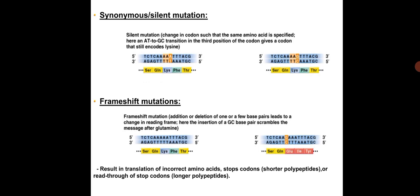Based on changes in the reading frame of codons on mRNA and changes in functional properties of the protein generated, mutations can be categorized. In synonymous or silent mutation, the change in codon is such that the same amino acid is specified. An AT to GC transition in the third position of the codon generates a codon that still encodes lysine, not affecting the function of the protein.